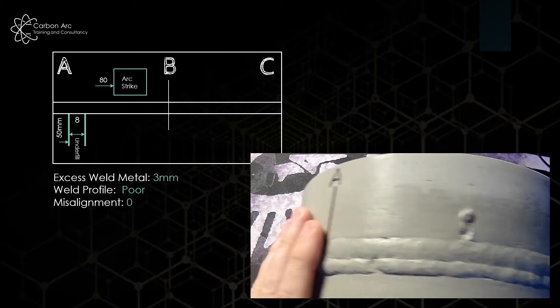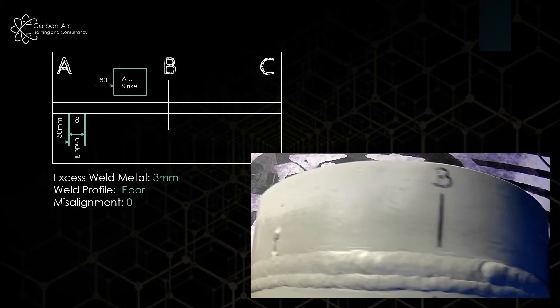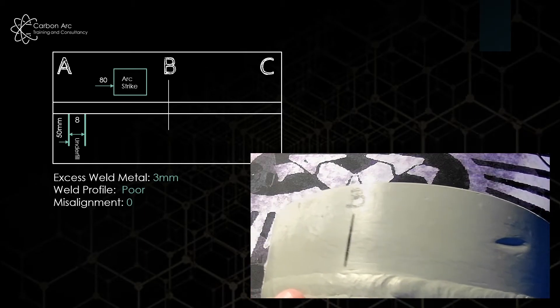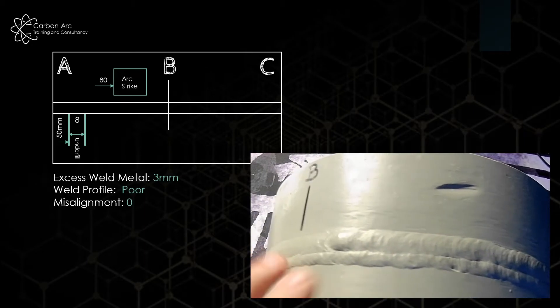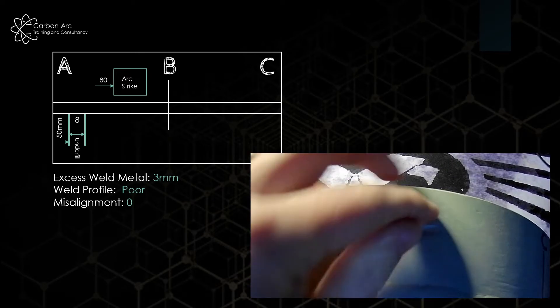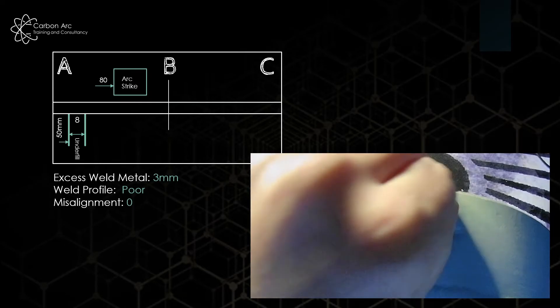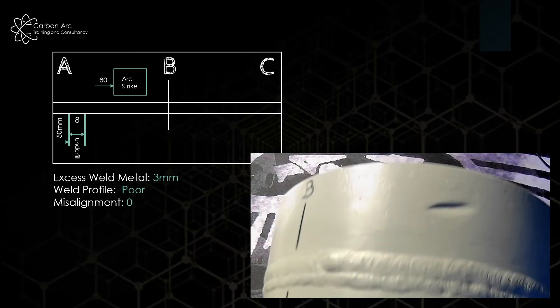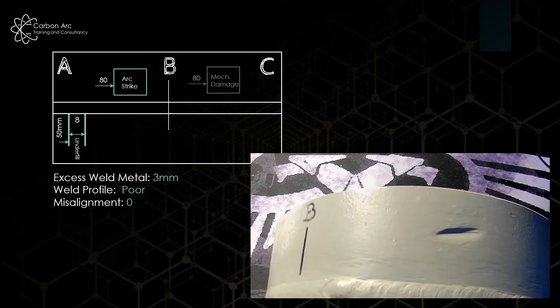Now, as I move out of this section, and I go to C, you can see there we've moved into B to C, and I have this very large bit of mechanical damage grinding mark, which is very, very sharp in its body. So we're definitely going to have to pick that up.